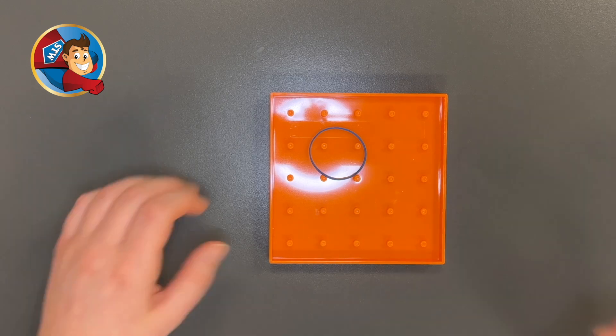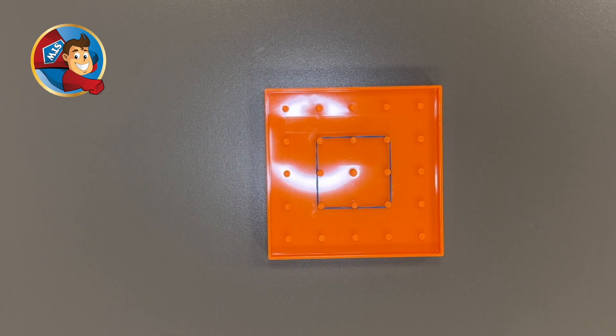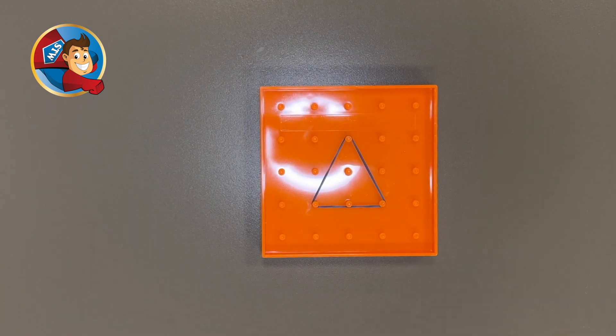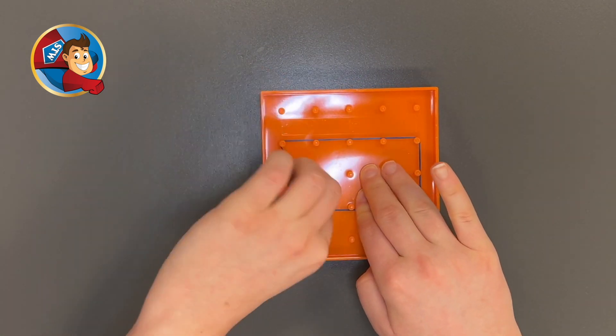With our trusty geoboard, we can make all sorts of shapes, from squares to triangles to rectangles. And the best part, we can use these shapes to calculate area and perimeter in a hands-on way.